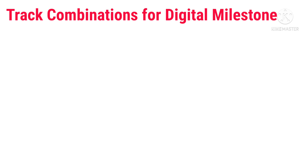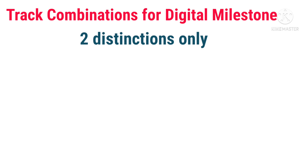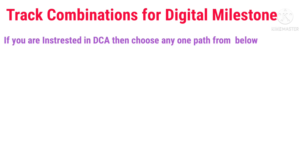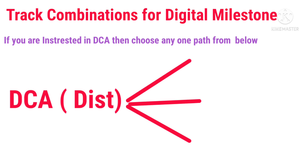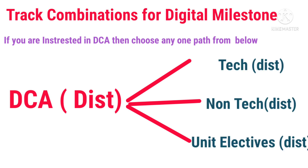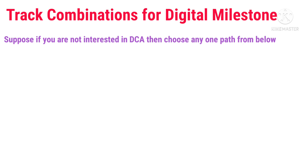Now I will tell you the track combination for Digital Milestone. For Digital Milestone we need only two distinctions. There are six paths to appear for two distinctions. If you are interested in DCA, you must get one distinction from DCA, and the remaining one distinction from a Tech track, Non-tech track, or Unit Elective. So that means: DCA one distinction plus Unit Elective one distinction is one option.